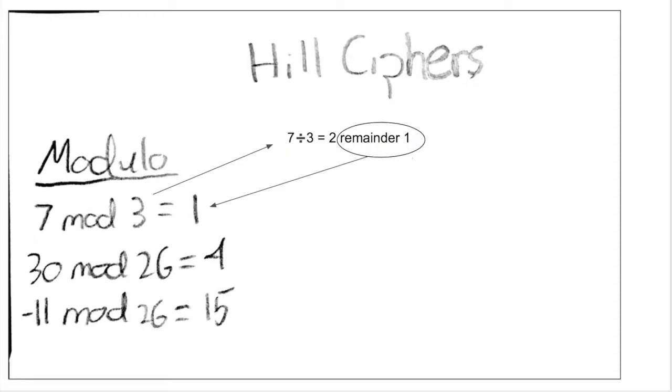Similarly, 30 modulo 26 would be equal to 4, because 26 goes into 30 once, leaving a remainder of 4.